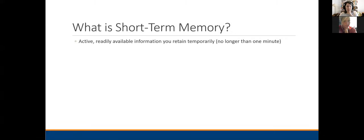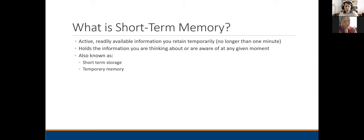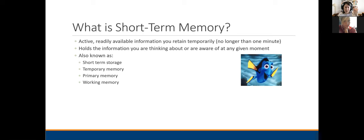Short-term memory is the things kind of at the front of your brain that you retain really temporarily — no longer than one minute. It holds the information you're thinking about or aware of at any given moment. Short-term memory is when you go to the next room to get your keys and then forget what you went there for — you walk through that door and have no idea why you got up off the couch. You put the thing you need to do in your short-term memory, and then poof, it's gone the minute you think of something else. This memory is also known as working memory. If you've ever seen Finding Nemo, Dory only has short-term memory — once a minute or two passes, whatever she was thinking about is gone and she resets.